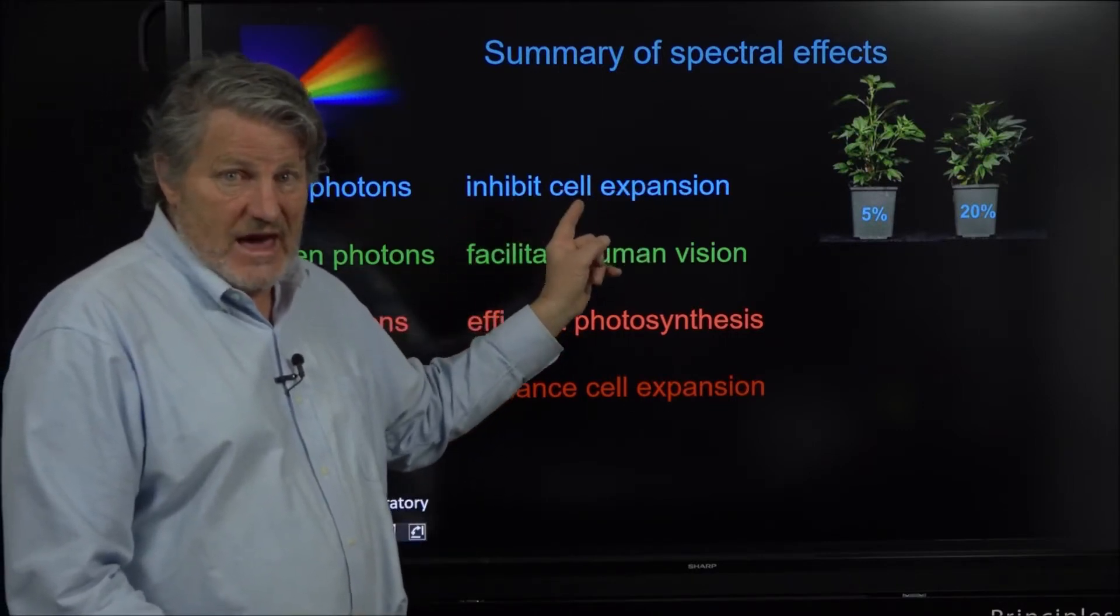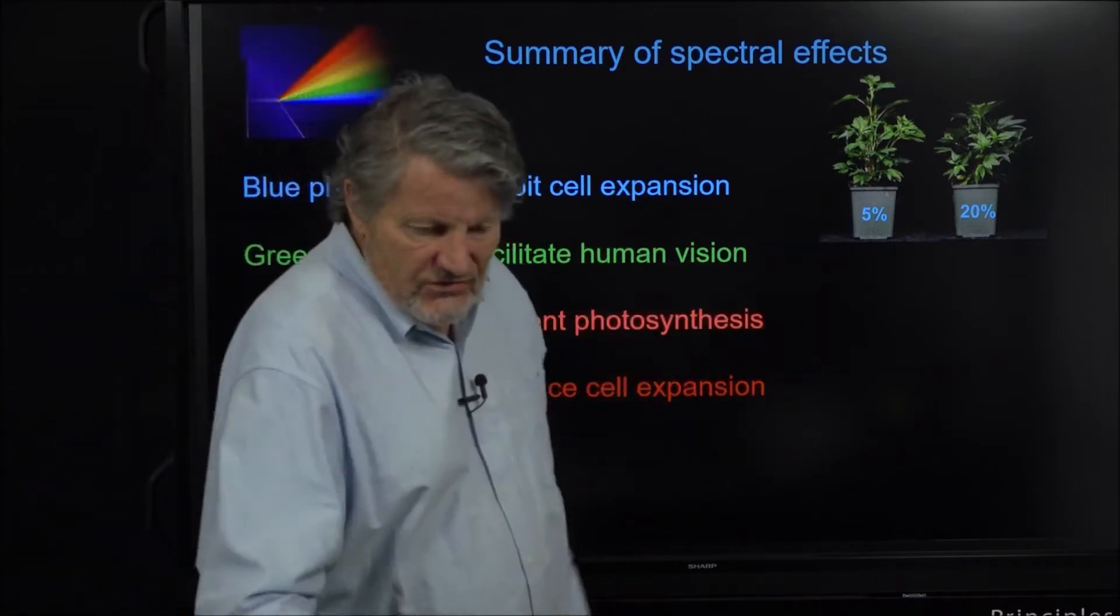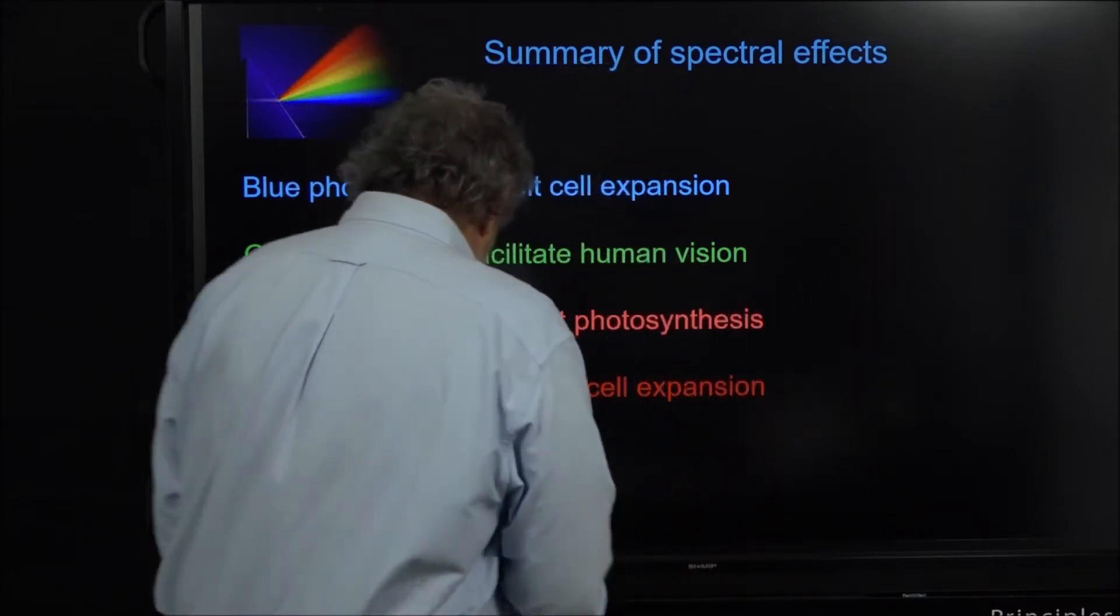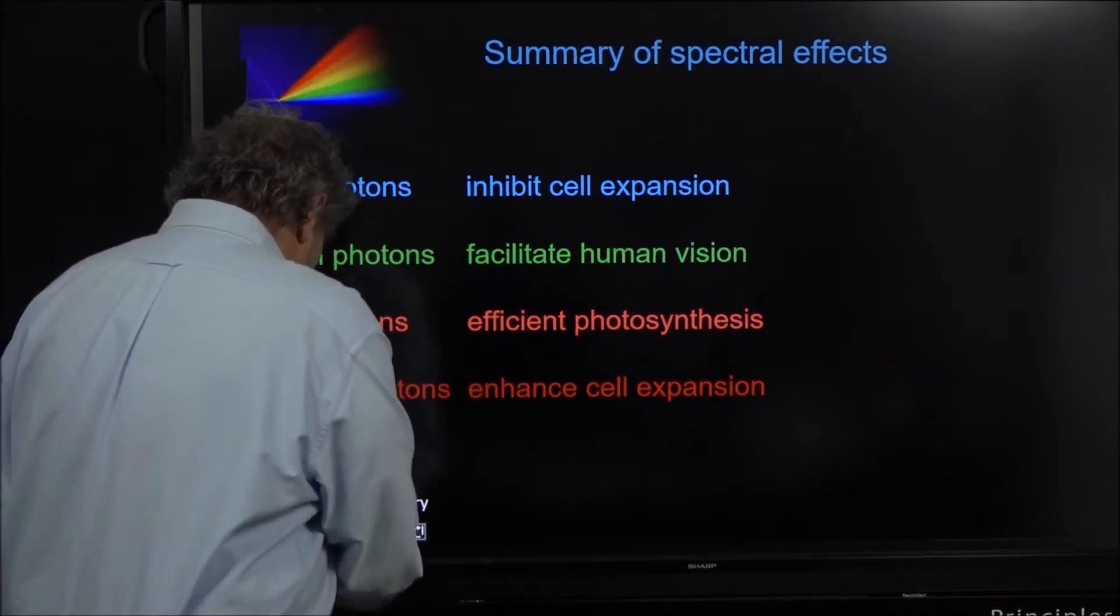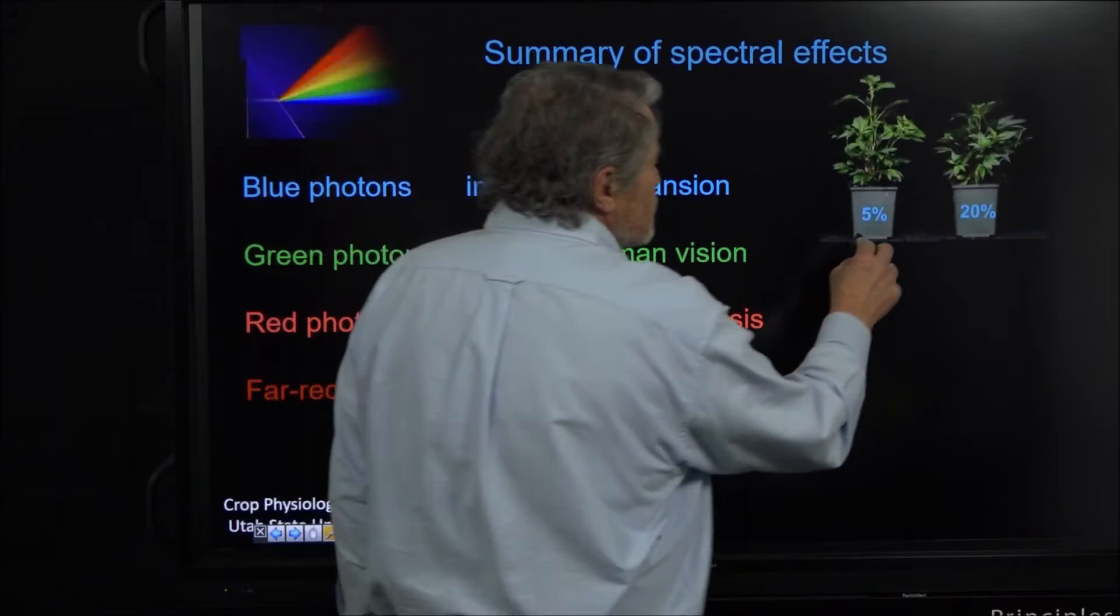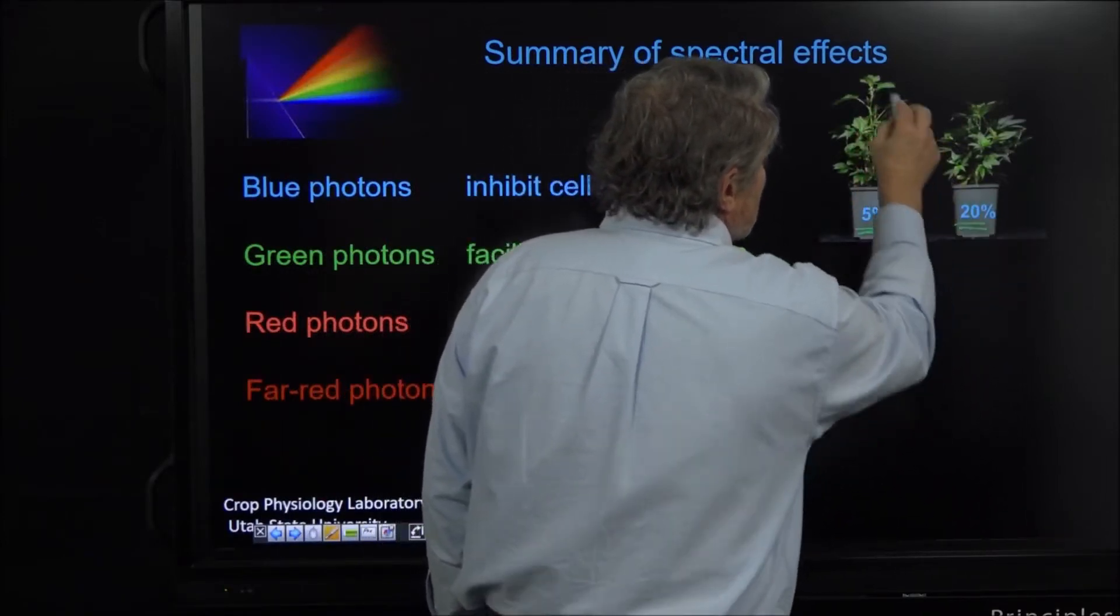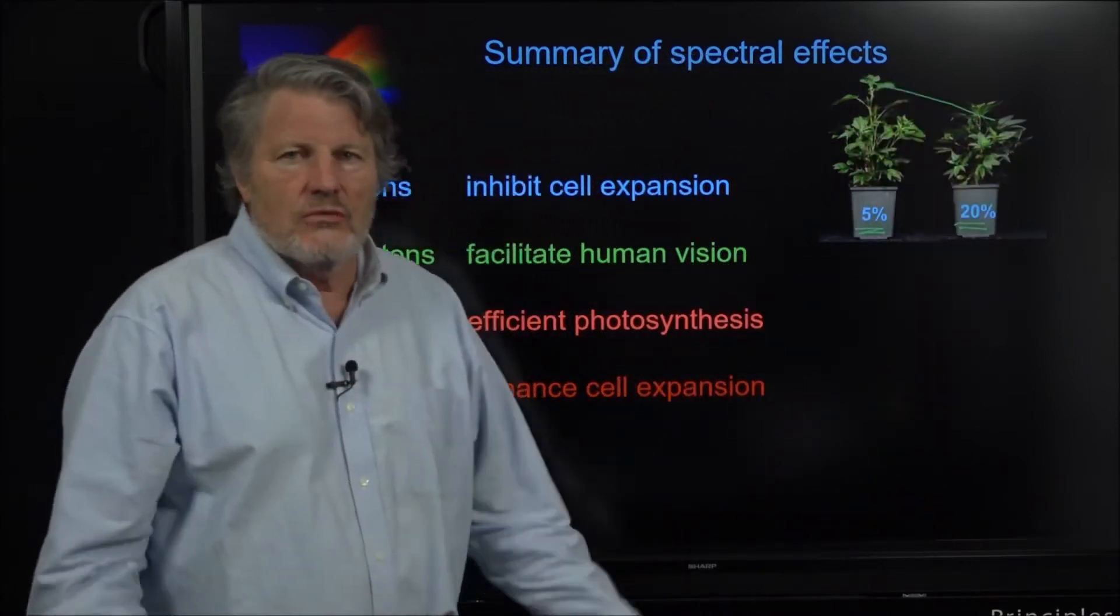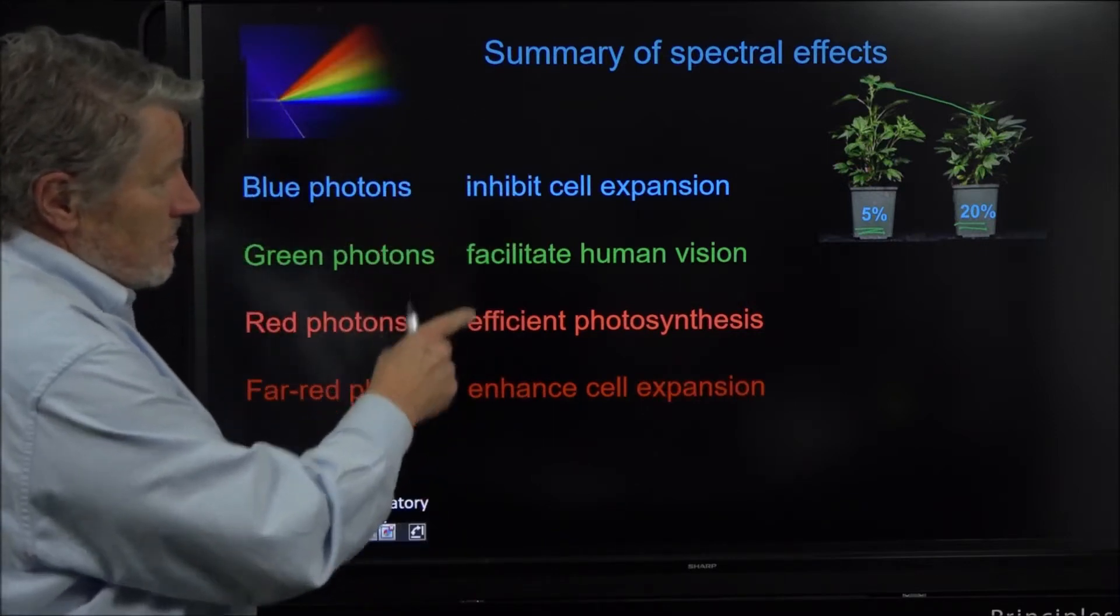Here's an example of blue photons. This is 5% blue right here - look at how tall that is. And we increase the blue to 20% and the height of the plant decreased. So there's the power of blue photons. Those two plants by the way are young cannabis plants, medical hemp. We're one of the few universities in the United States with the license to study medical hemp.